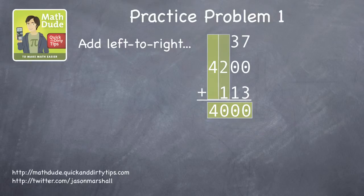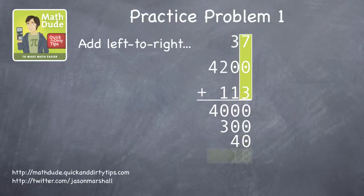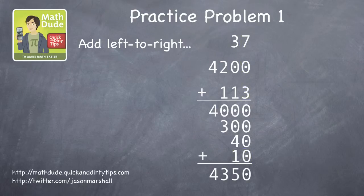Moving to the right, there are three hundreds. Write that below. Again to the right, there are four tens. And finally, there are ten ones, which of course is the same as one ten. So tally those numbers up, and the final answer is 4,350. No need to carry digits or do any additional bookkeeping.